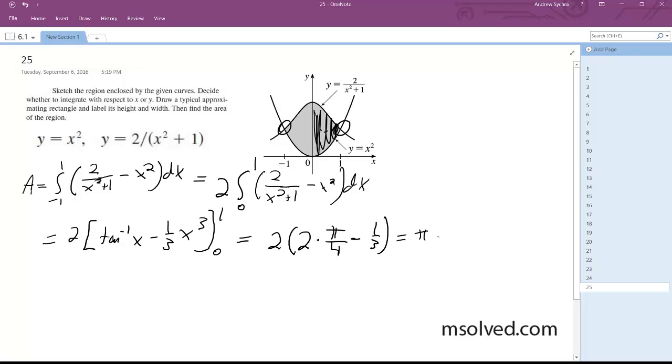That's equal to pi minus 2 thirds. That's the exact answer, or the approximate answer is around 2.47.